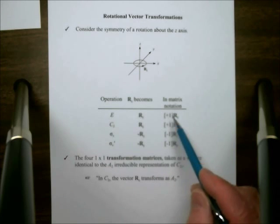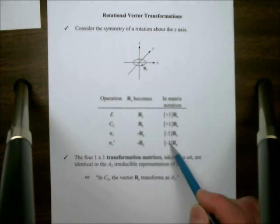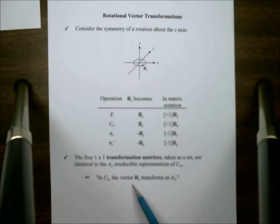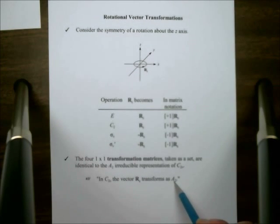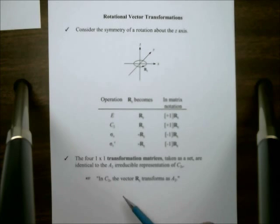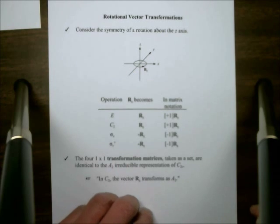So we get the characters plus 1, plus 1, minus 1, minus 1, and those are the characters that we find for the irreducible representation A2. So we say in C2v, the vector rz transforms as A2.